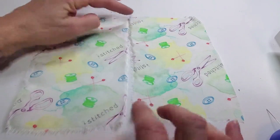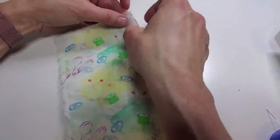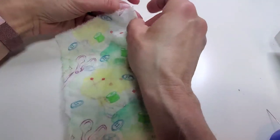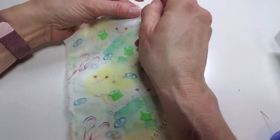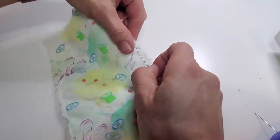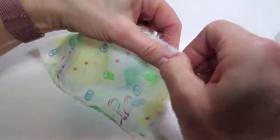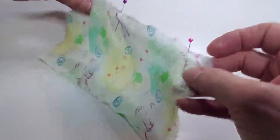To begin the French seam, you're going to put your pieces wrong sides together. We'll be sewing this twice. The first time we sew will be wrong sides together with a very narrow seam allowance. Then we'll turn and stitch it right sides together.